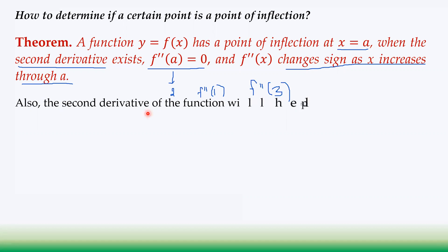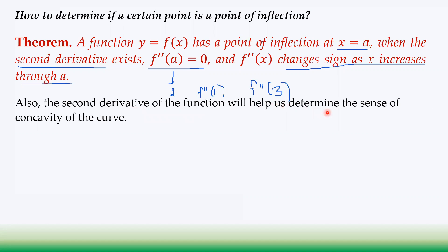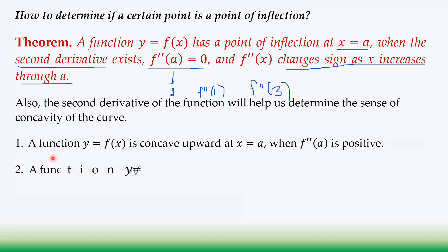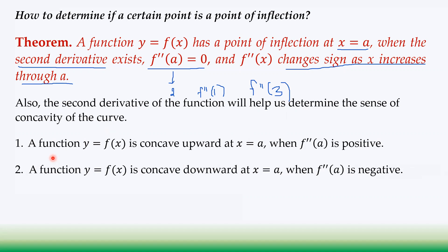The second derivative also helps us determine the sense of concavity. A function y = f(x) is concave upward at x = a when f''(a) is positive, and concave downward when f''(a) is negative. Those are the theorems on concavity and point of inflection.